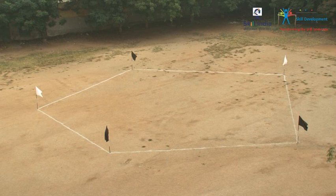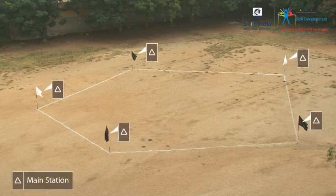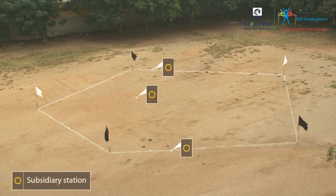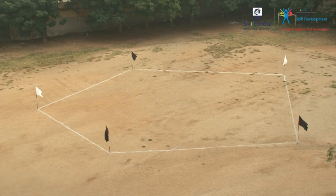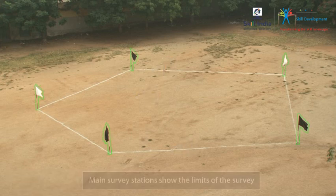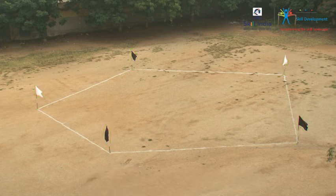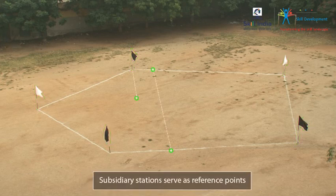In surveying terminology, the prominent points of a survey are called main stations, and the minor points are known as subsidiary or tie stations. Main stations show the limits of the survey, while subsidiary stations serve as reference points.